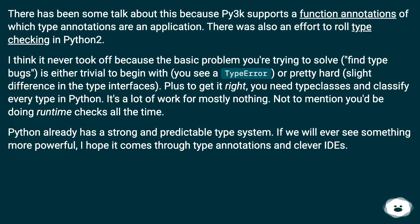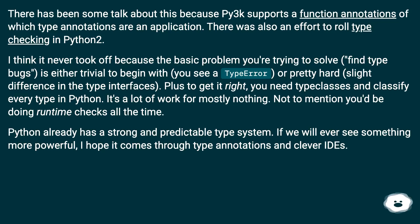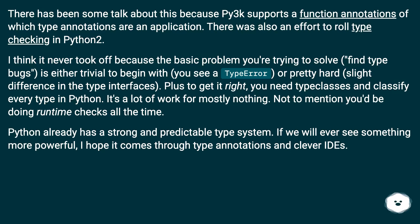There has been some talk about this because Python supports function annotations, of which type annotations are an application. There was also an effort to roll type checking into Python. I think it never took off because the basic problem you're trying to solve — finding type bugs — is either trivial to begin with (you see a type error) or pretty hard (slight differences in type interfaces). Plus to get it right, you need to classify every type in Python. It's a lot of work for mostly nothing.